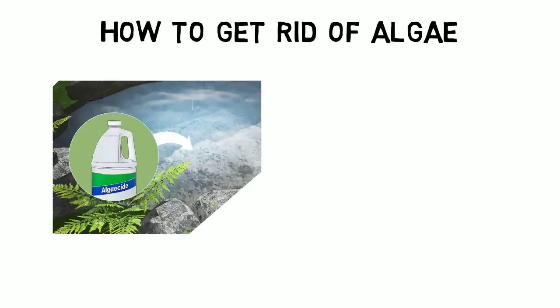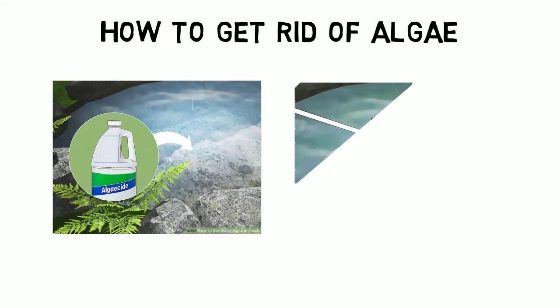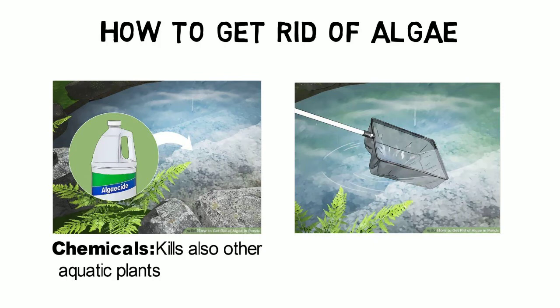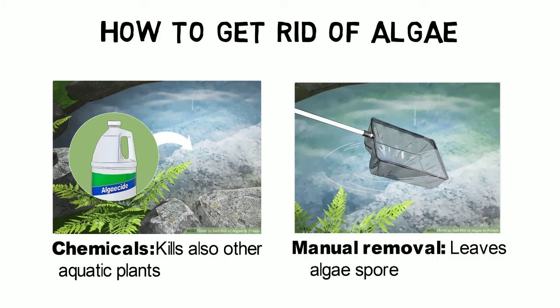Chemicals or manual removal of algae provide only a short-term solution until the algae comes back, as they don't eliminate one of the three factors for algae growth. Chemicals will also kill other aquatic plants, which provides nutrients for new algae growth. Manual removal leaves algae spores behind in the water that will soon cause new algae blooms.